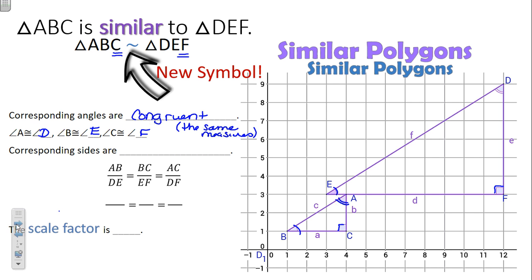Corresponding angles are congruent or the same, but the sides certainly aren't the same measures. They're slightly different. The sides are going to be... This looks like something we did yesterday, doesn't it? What did we call it when we had a fraction equals a fraction? Let's start with a P. Proportional. Corresponding sides are proportional.